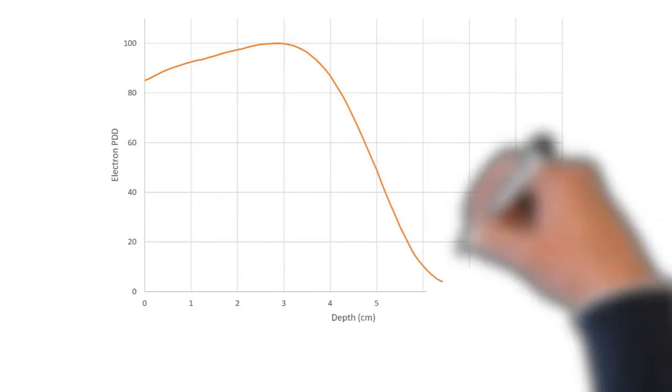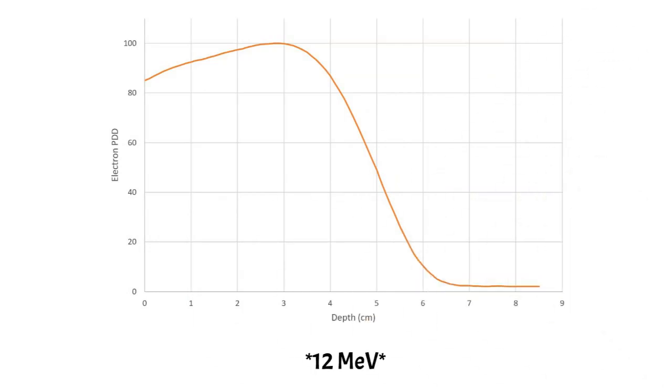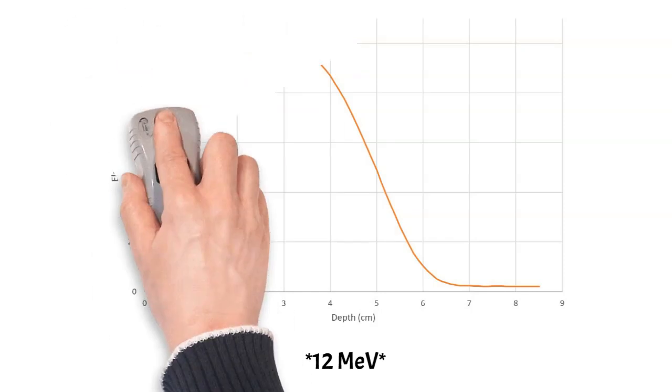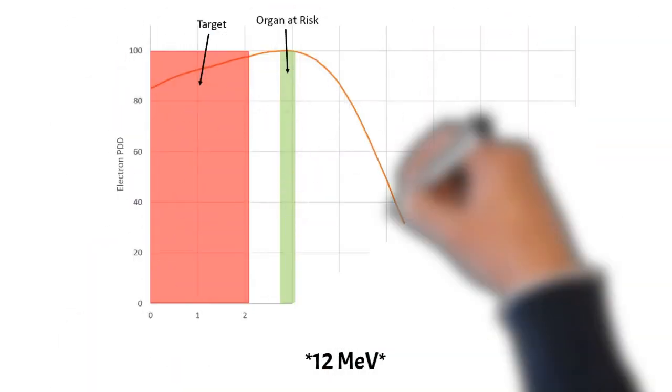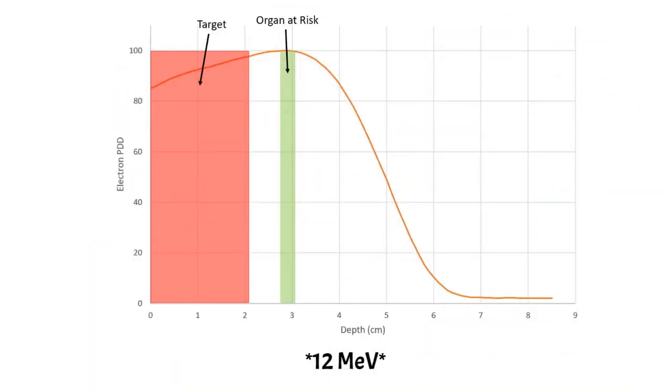And here's an example of what I mean by that. Say the physician wants to use a 12-MeV electron beam to treat some target that has the shape that you see here. The target is located superficially, and then you have some organ at risk that is located at a depth of D-max. What could we do to make sure the target is getting a high dose and the organ is getting a low dose? Well, we could change the beam energy, but the physician wants to use 12-MeV.